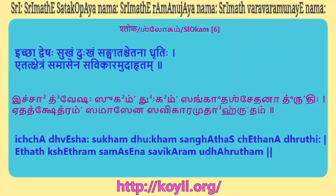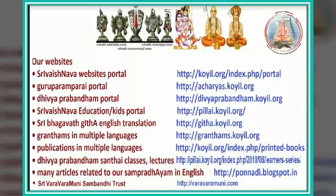From the 7th Shlokam, Bhagavan is going to beautifully explain many noble qualities which are expected in the Jeevatma who is desirous of Moksham. We will see that in the next session. Alvar Embarumanar Jeer Thirudigale Sharanam. For more information about our Sri Vaishnava Sampradaya, please download the Koyil app from Google Play Store or Apple App Store. Our website is koyil.org.